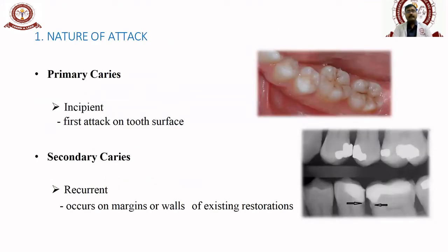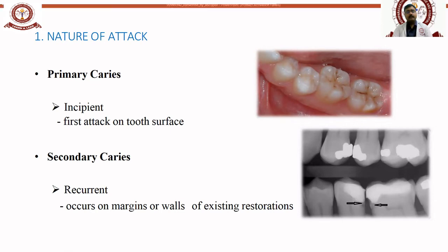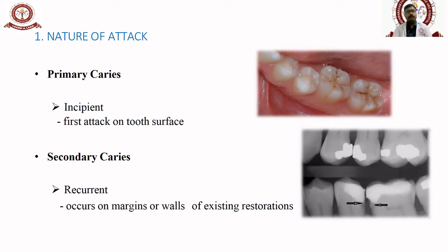Based on the nature of attack, there are two types: primary caries and secondary caries. Primary caries is the first stage of caries — incipient caries — happening on the tooth surface. It is the first stage commonly seen in any tooth, where no obvious color change is seen, only a small chalky white color can be observed on the tooth. Secondary caries, also called recurrent caries, is when caries occurs again in a tooth after a restoration or filling has been done.